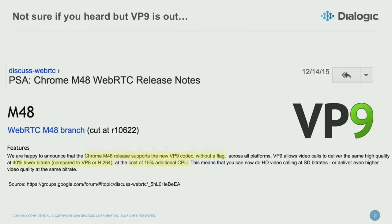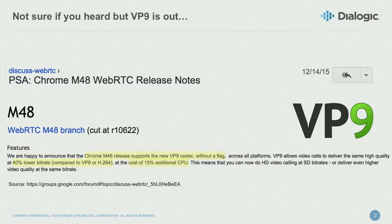So what differentiates this from yet another codec? VP9 has made its way as a pretty intelligent codec. What differentiates it from VP8 and others is the statement that at 40% lower bitrate compared to VP8 and H.264, you get the same quality. That's a pretty bold statement — offering the same quality at a much lower bitrate on the wire.